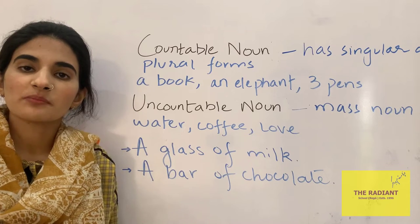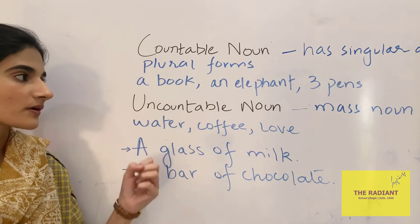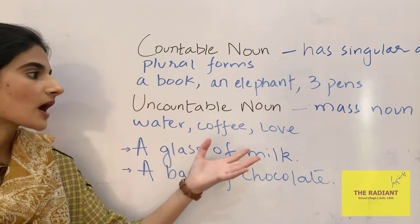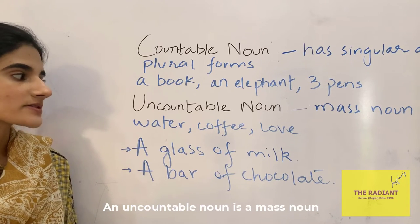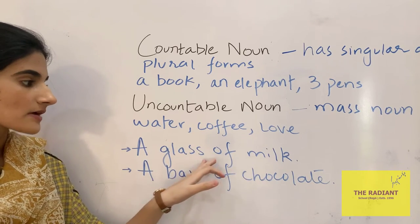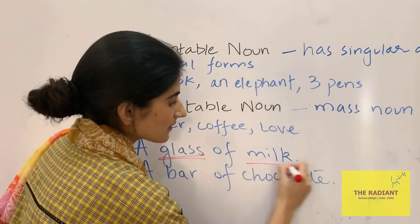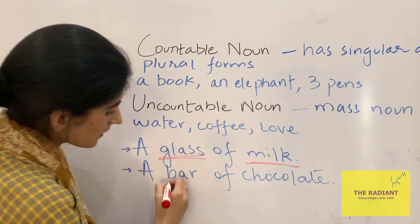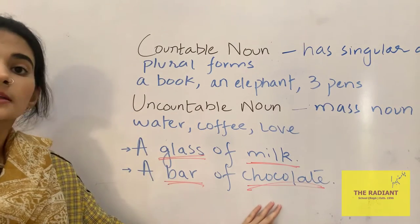Countable nouns are simply nouns that can be counted. They have singular or plural forms — for example, a book, an elephant, three pens. Uncountable nouns are those which cannot be counted; they are mass nouns — for example, water, coffee, love. A glass of milk: glass is a countable noun and milk is an uncountable noun. A bar of chocolate: bar is a countable noun, while chocolate is an uncountable noun.